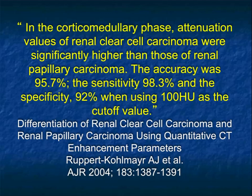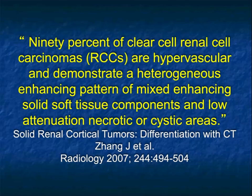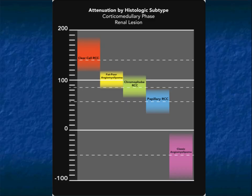Looking at the differential enhancement of clear cell and papillary from Kalmar's article, sensitivity and specificity are very high using 100 as a cutoff — people have argued 90 or 100, but 100 is a really good number, giving better than 95% accuracy. It's not perfect because 90% of clear cell renal cells are hypervascular, meaning 10% are not. On the chart: above 100 is clear cell, papillary typically below 90, chromophobe in the 90 to 110 range, and fat-poor AMLs can also be highly vascular with higher attenuation — but the key differentiator is fat.